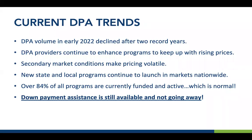State housing finance agencies are dealing with interest rate volatility in terms of pricing and their ability to offer certain options, but the programs are still there. Those impacted are doing everything they can to keep programs out there, pricing them competitively and using bond funding to offset interest rates and offer below-market rates. We're seeing a net increase in available programs across the country for several quarters running, with new state and local programs continuing to launch nationwide. That means more opportunity for buyers and for you.